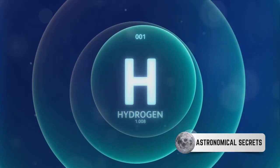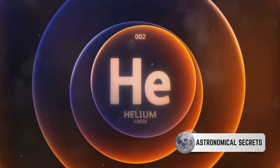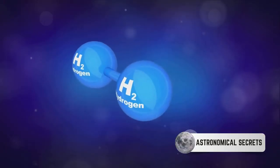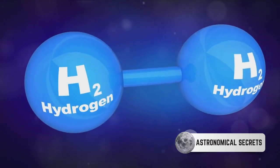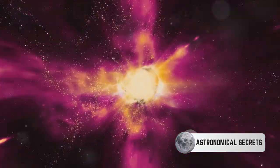It's not just a simple merger, though. When hydrogen atoms fuse, they form a helium atom. But here's the catch: the helium atom is slightly lighter than the sum of the two hydrogen atoms that made it. So, where does the missing mass go?